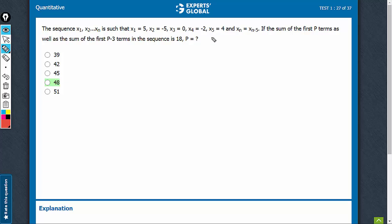Let's simply add x1 to x5 and see what we get. We get 5, minus 5, 0, minus 2, and 4. So they all add up to a positive 2.